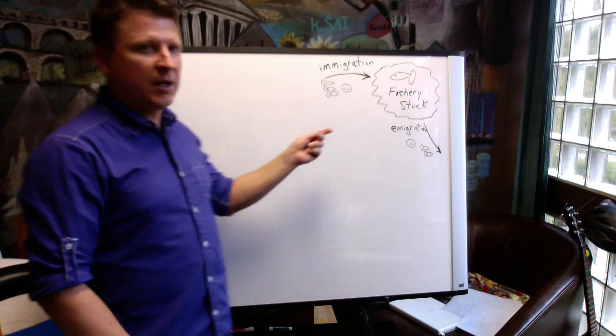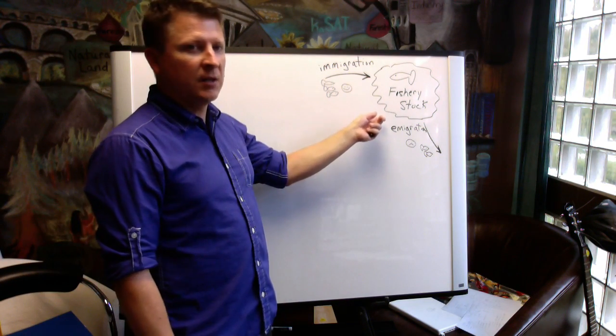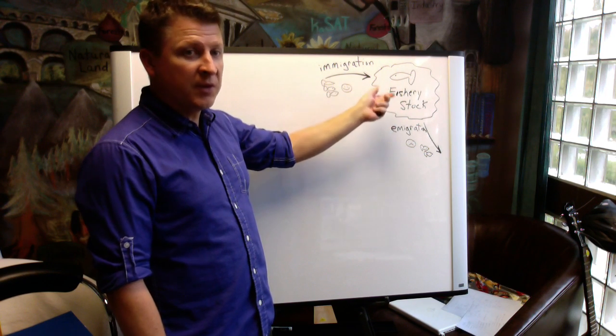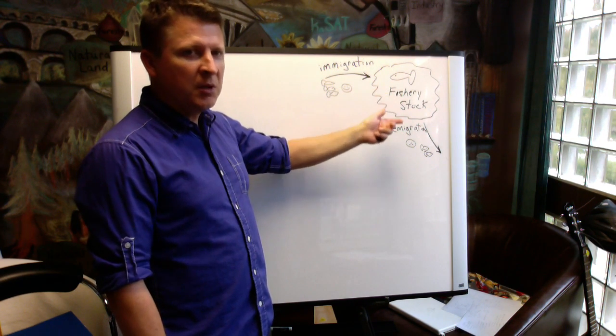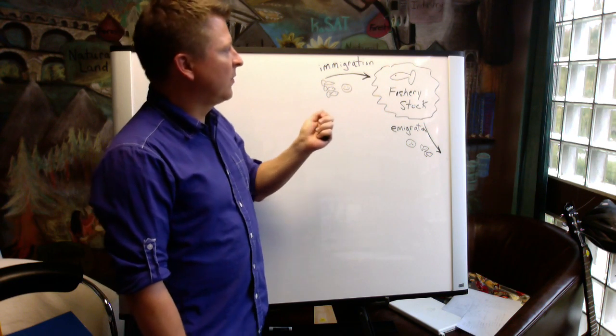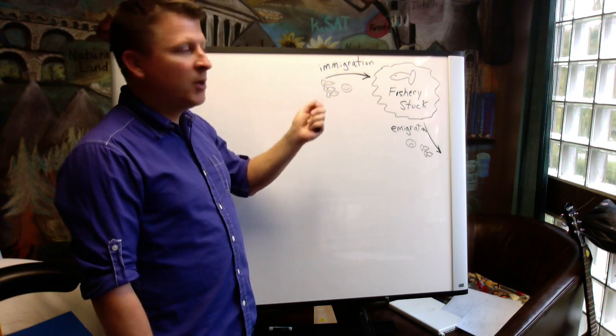So we've conceptualized a fishery stock that has a population of fish in it. Maybe it's thousands of fish, it could be millions of fish, it could be kilograms of fish. It could be weight or number.